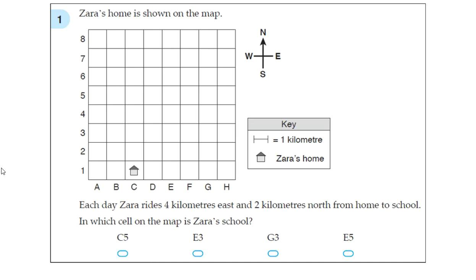Question 1. Zara's home is shown on the map. Each day Zara rides 4 kilometers east and 2 kilometers north from home to school. In which cell on the map is Zara's school? So first of all, 4 kilometers east and 2 kilometers north. East is to the right, north is going up.